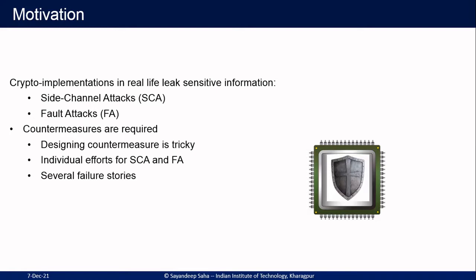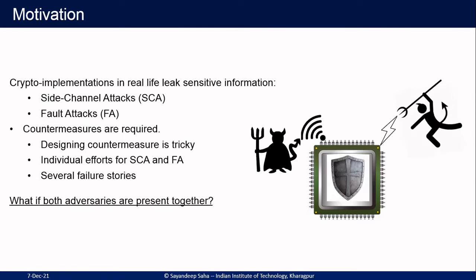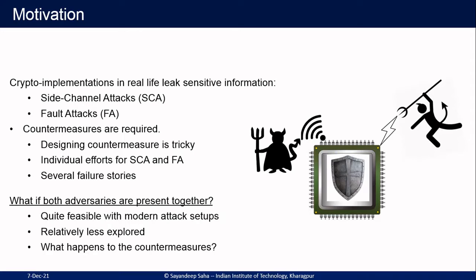We address the question that when both kinds of countermeasures are present, can there be adversaries joining their hands — that is, can they be present together? Given modern experimental setups, it is quite feasible and we have also shown that practically in this work. However, this area is relatively less explored. Our major concern is that when both countermeasures are present and the adversaries are present simultaneously or assisting each other, what is the picture? What happens to the countermeasure? That is what we address in this work.